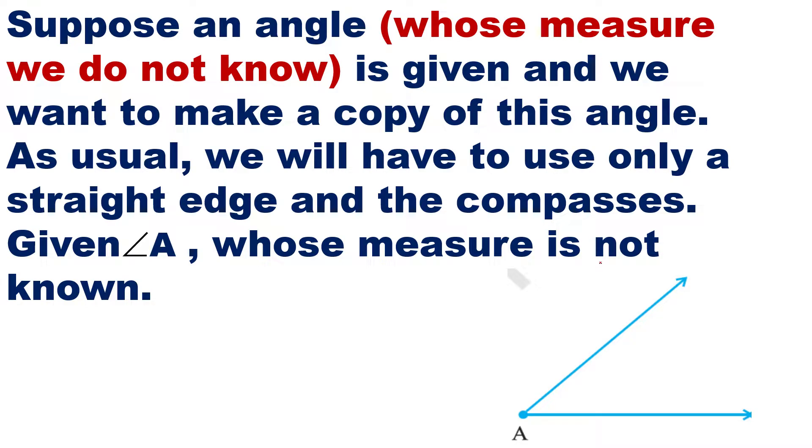Suppose an angle whose measure we do not know is given and we want to make a copy of this angle. As usual we will have to use only a straight edge and the compasses. Given angle A whose measure is not known. So this is your angle, I don't know how many degrees are there.